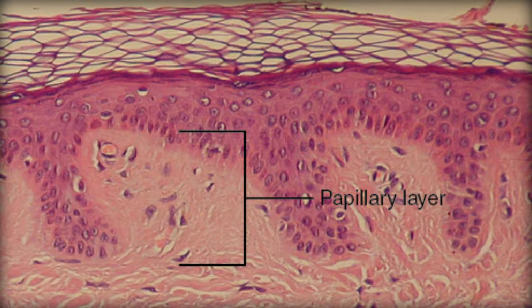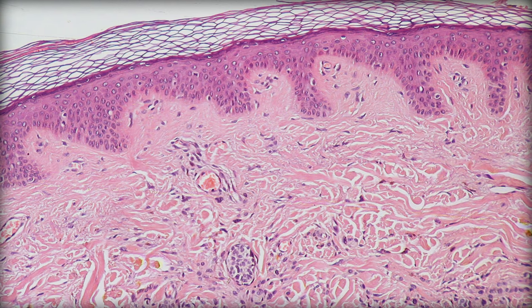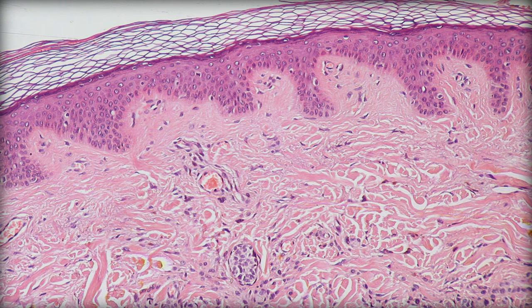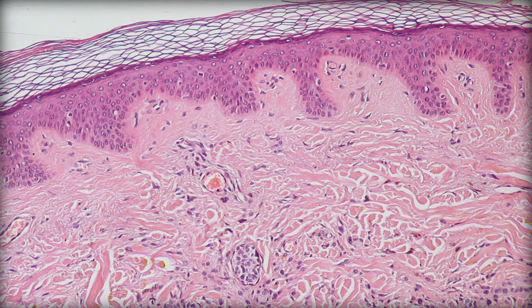The skin as an organ does so many complicated and intricate tasks — it's got hair follicles, capillaries, nerves, and oil glands all around it to do things like thermoregulation and sensation. So to give it a little extra structural integrity, we have irregular dense connective tissue right in the middle of the dermis.